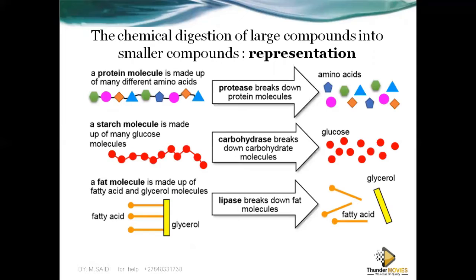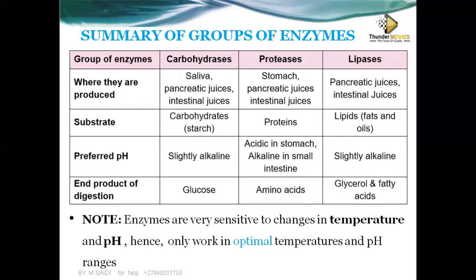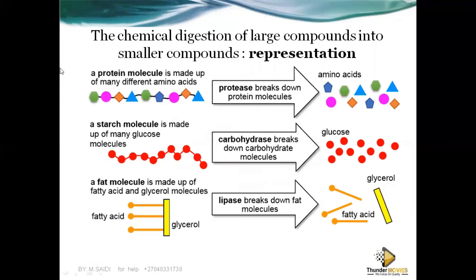Here is a diagrammatic representation of what we've explained. Protein molecules are made up of many small amino acids. When you break down proteins using proteases — such as pepsin, trypsin, and peptidases — you produce amino acids. Starch molecules are made up of many glucose molecules; when you break down starch, you produce glucose.